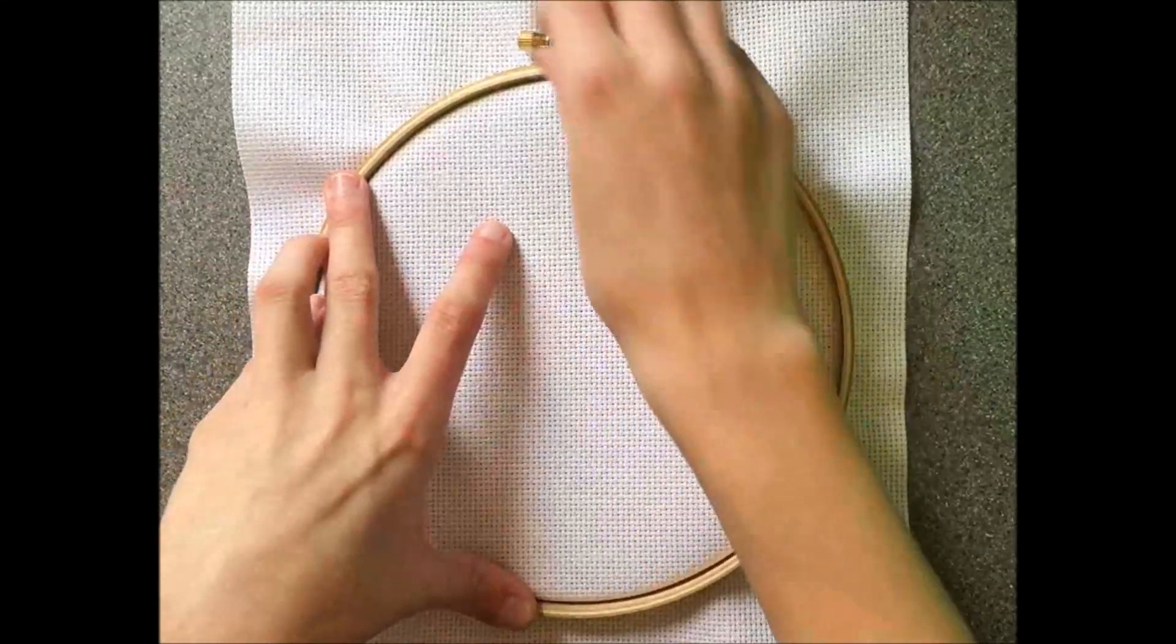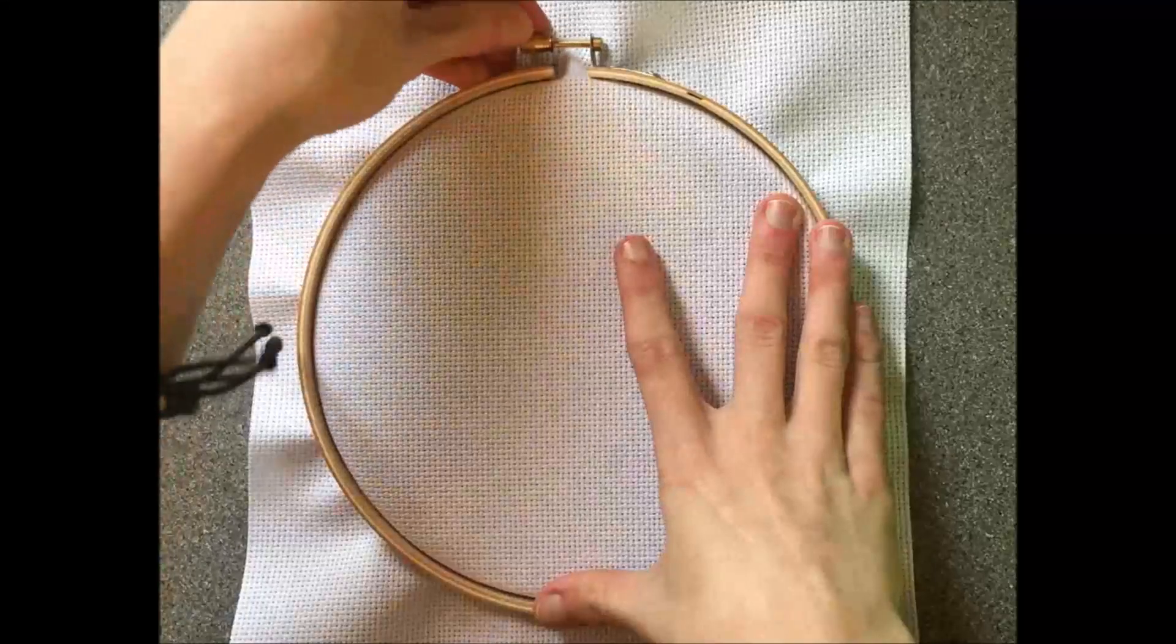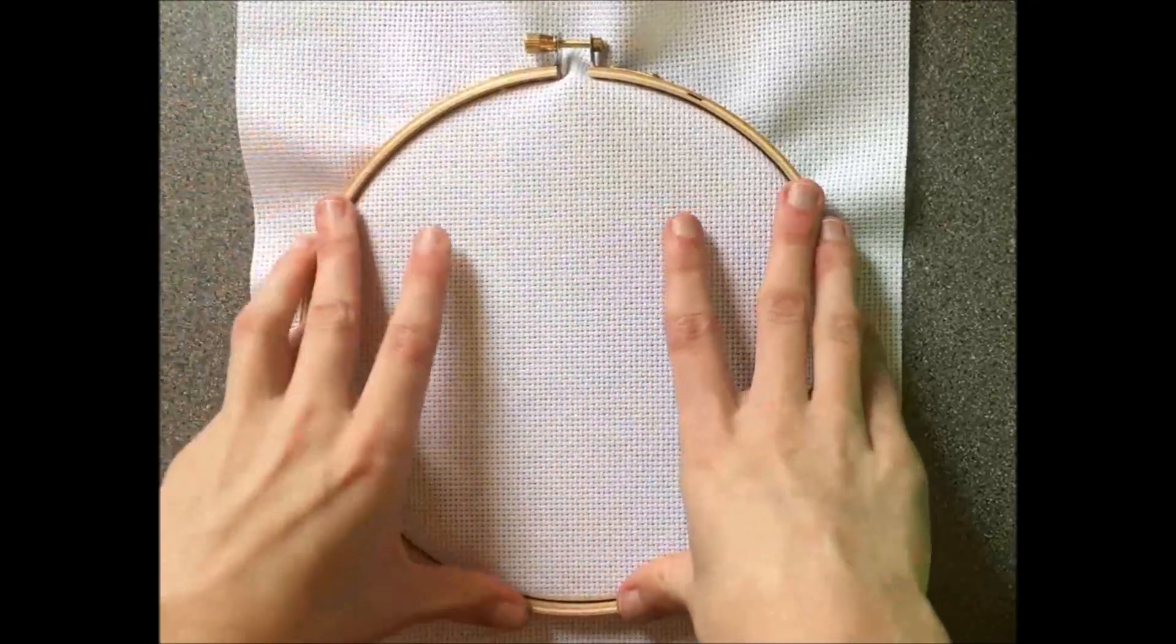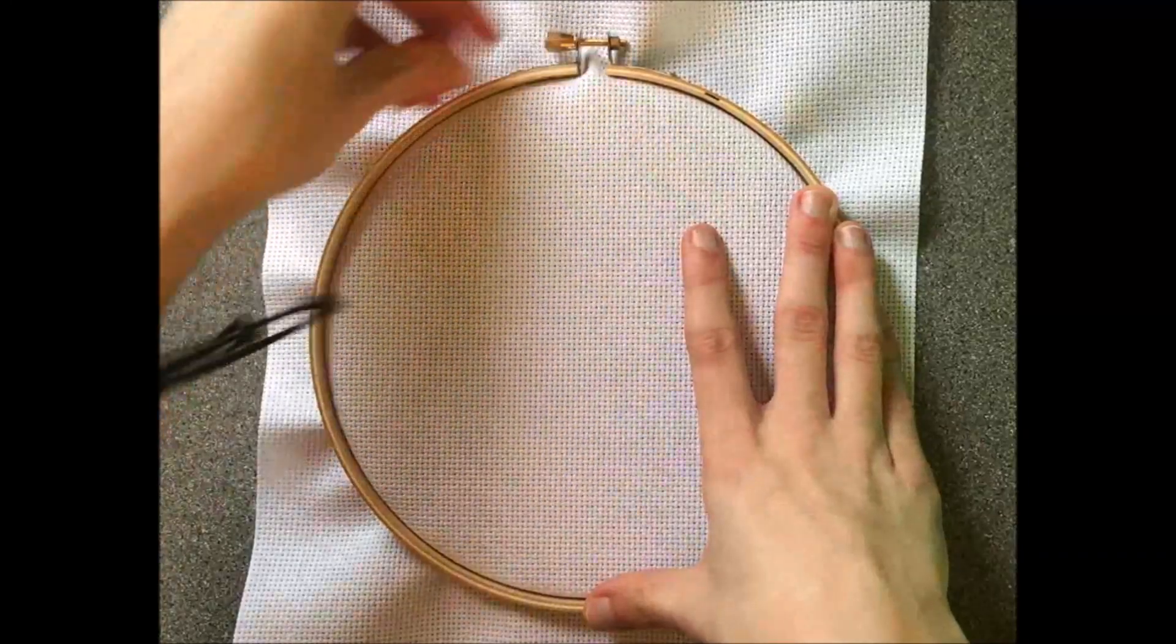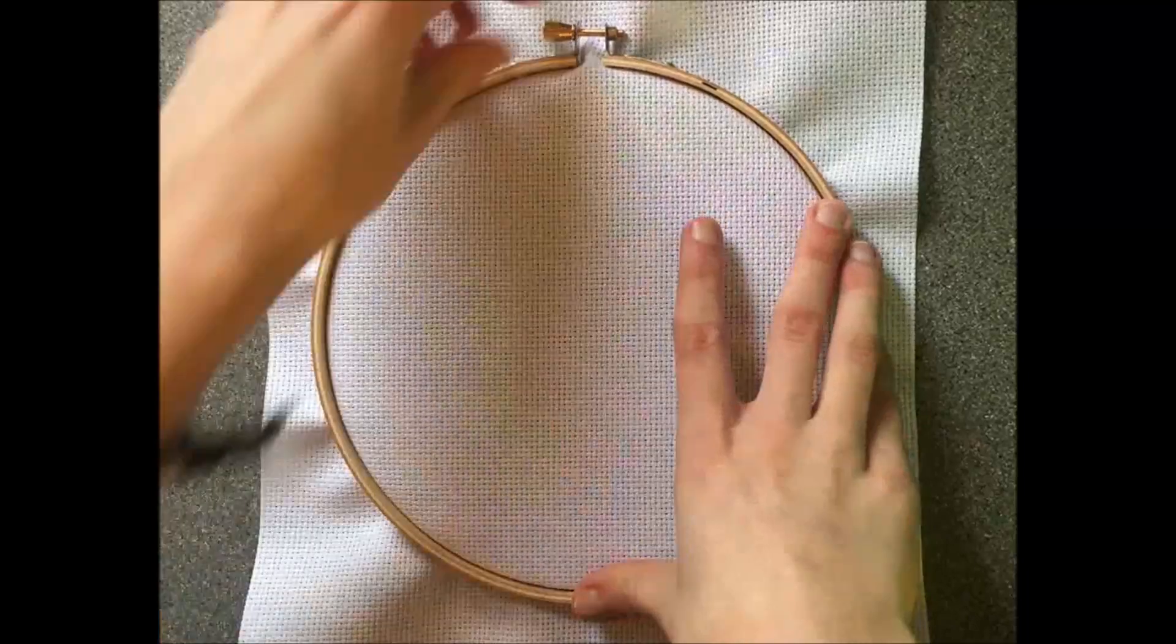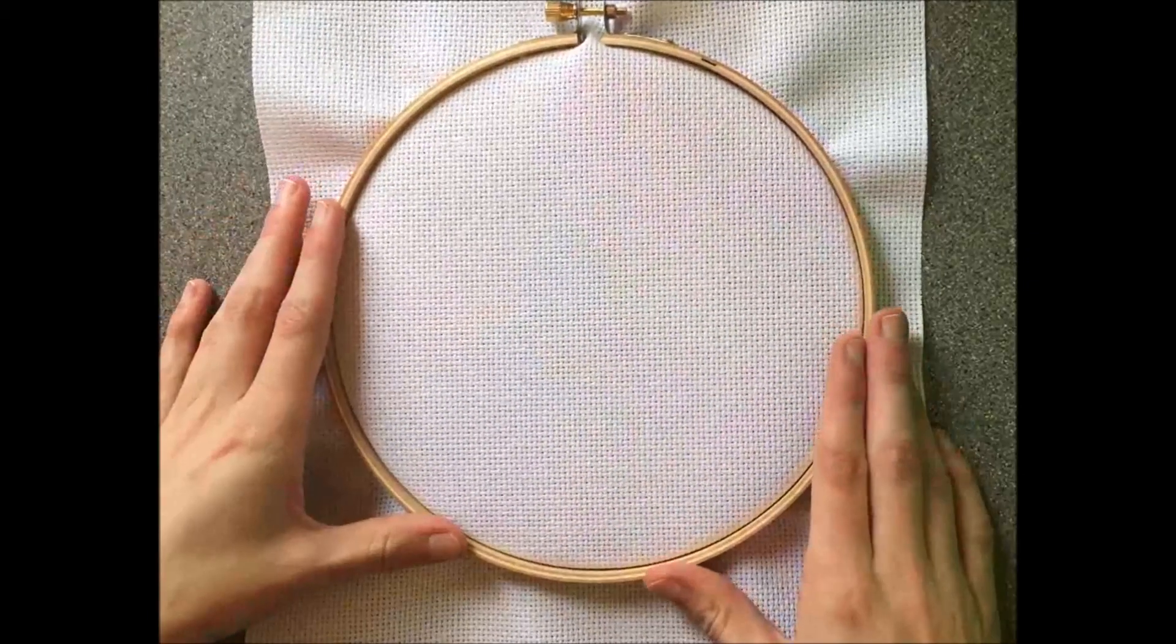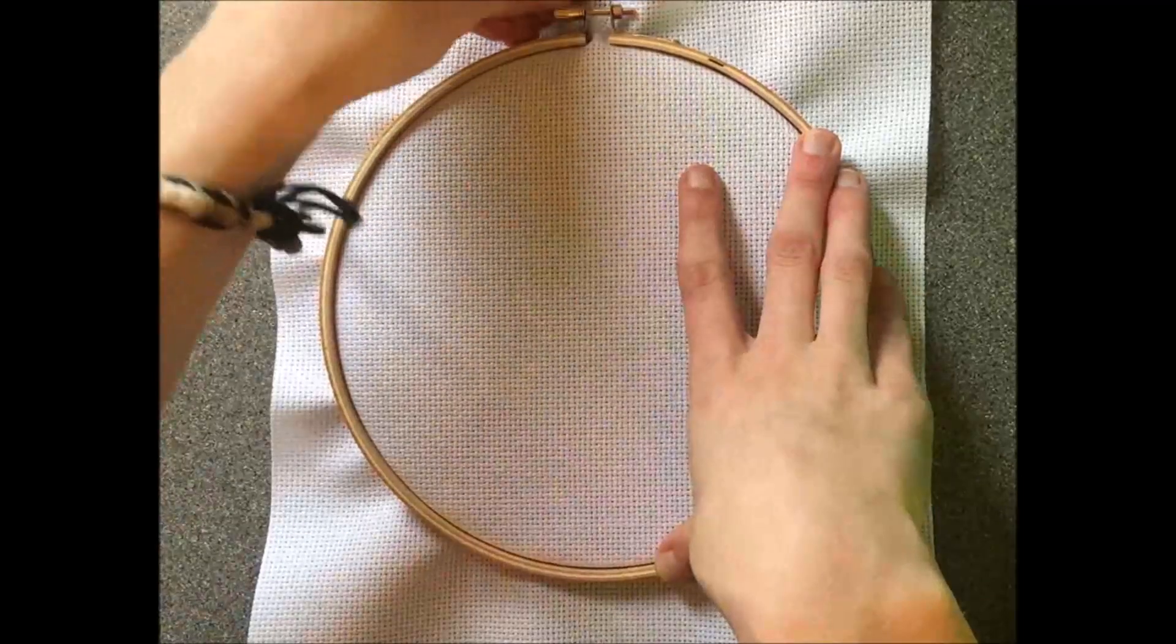Now while you're still holding this down, you want to tighten this back up just a little bit, and then make sure to push it back down and tighten it some more. Continue doing that until the hoop is completely secured on the cloth.